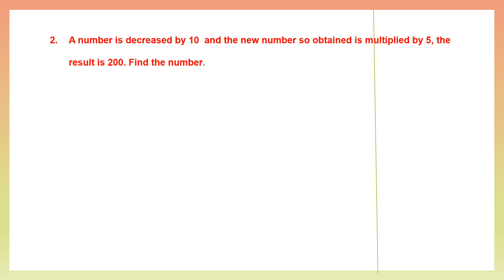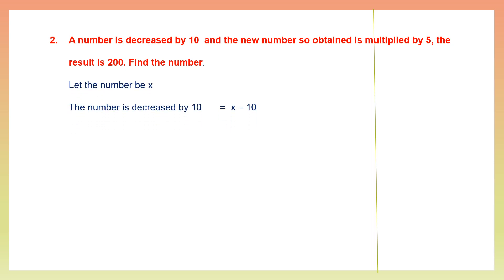Question 2: A number is decreased by 10 and the new number so obtained is multiplied by 5. The result is 200. Find the number. So let's go slow. A number is decreased by 10. So let the number be x, and the number decreased by 10 means x minus 10.